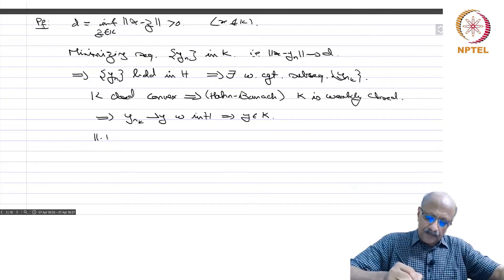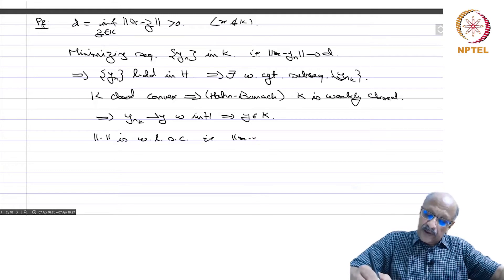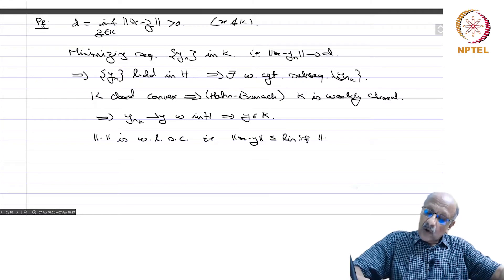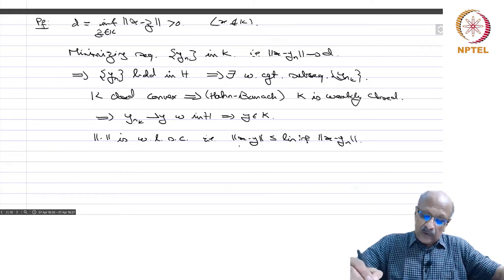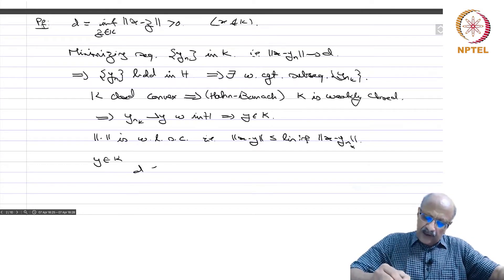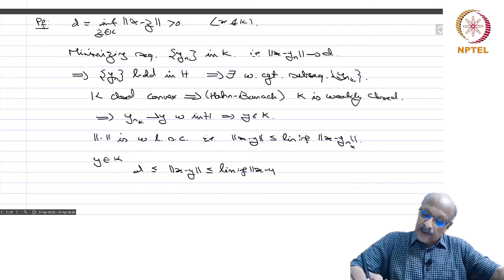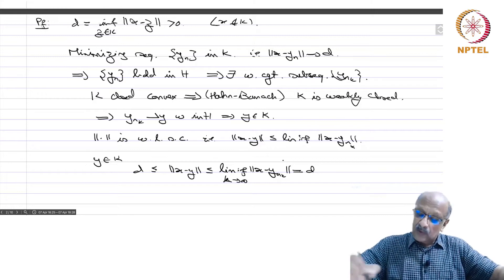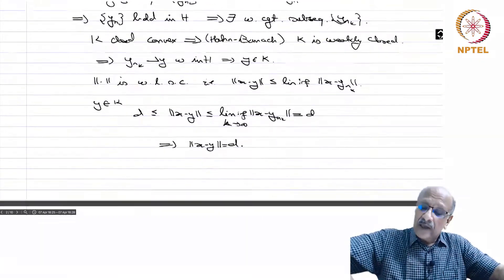Also, the norm is weakly lower semi-continuous, meaning that the norm of x minus y is less than or equal to the lim inf of the norm of x minus y_n. But y belongs to K, so d is less than or equal to norm of x minus y, which is less than or equal to lim inf of norm of x minus y_{n_k}, and that equals d because norm of x minus y_n goes to d. Therefore norm of x minus y equals d, and we have established the existence of a closest point.